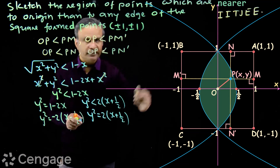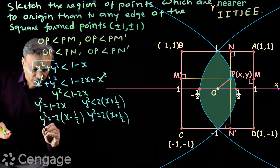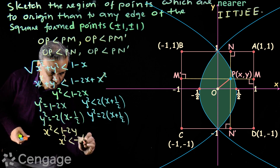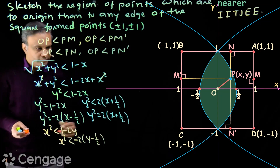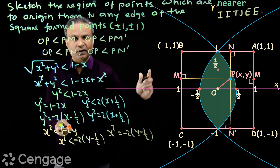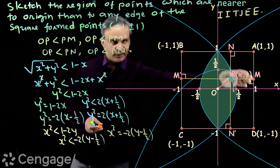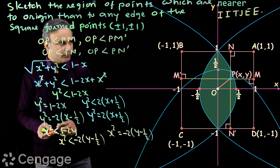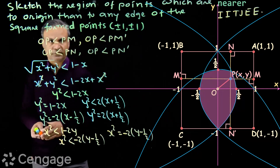From the third inequality, OP < PN, we get x² < 1 - 2y, or x² < -2(y - 1/2). Point P lies in the interior region of the parabola x² = -2(y - 1/2), whose vertex is at (0, 1/2). This parabola intersects the x-axis at (1,0) and (-1,0). It opens downward because the coefficient is negative. Point P lies in the interior region of this parabola.